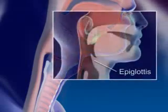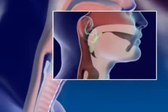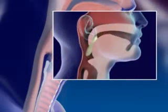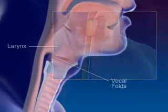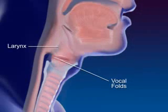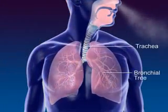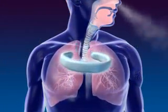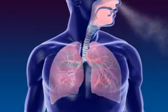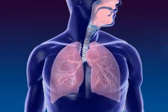Air moves into the pharynx, or throat, the common passageway for food and air. Air continues on to the larynx. The epiglottis, a flap of tissue in front of the larynx, closes off the larynx when swallowing to prevent food from entering. The larynx, or voice box, contains the vocal folds. The trachea, or windpipe, connects the larynx to the bronchial tree.